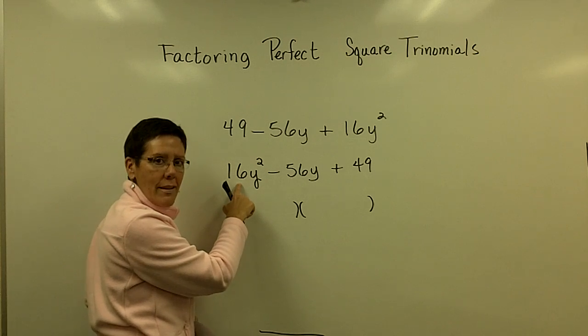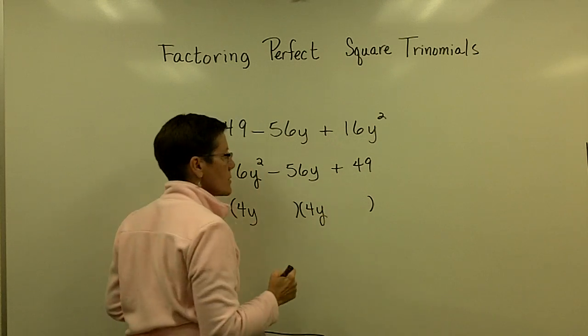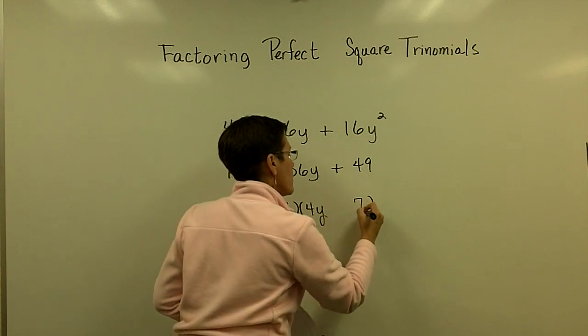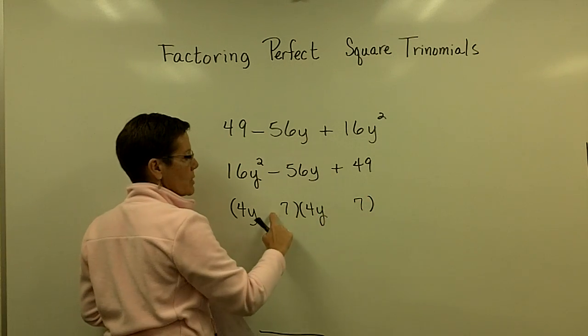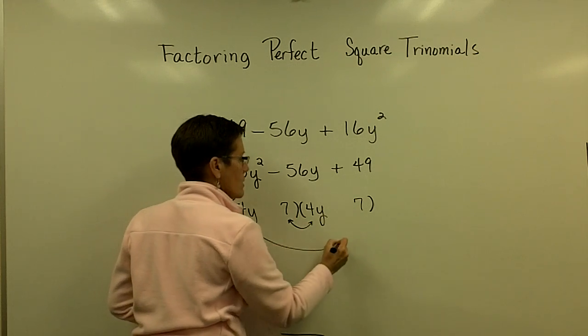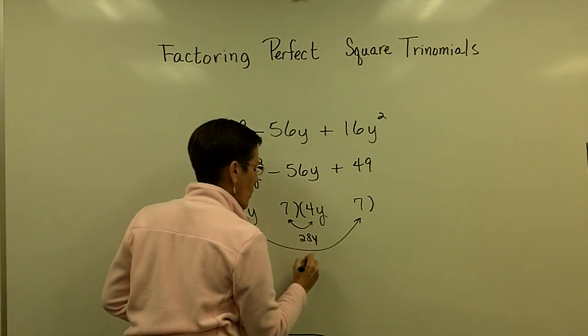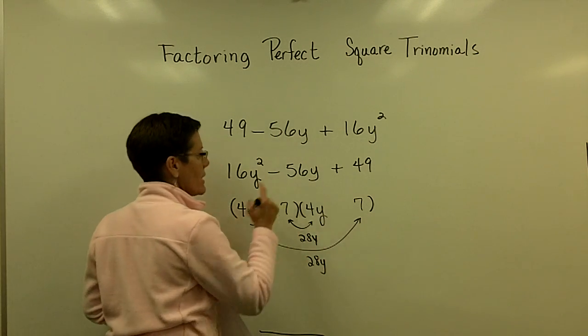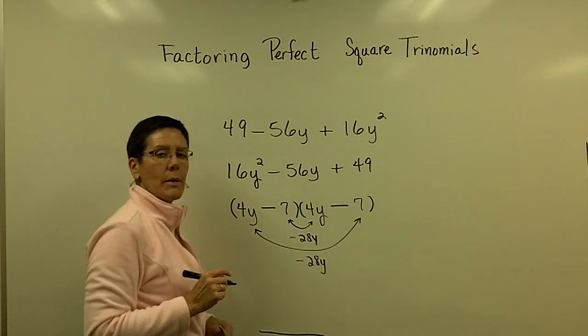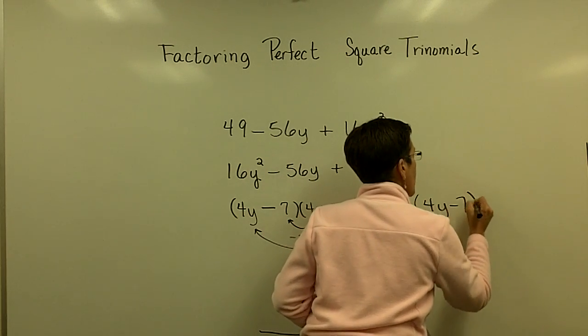Let's assume this is a perfect square trinomial. What's the square root of 16? 4. So let's put a 4y in the front of each of these. What's the square root of 49? 7. Now I want their product to be a positive 7. But I want these inside and outside terms which are both 28y's, they're both 28y's, I want them to add to be a negative 56. So I'm going to put a minus sign here and a minus sign here for those two to add to be a negative 56. And my answer would be this 4y minus 7 that quantity squared.